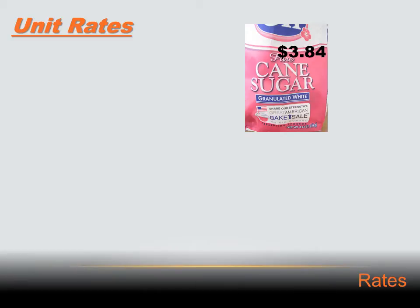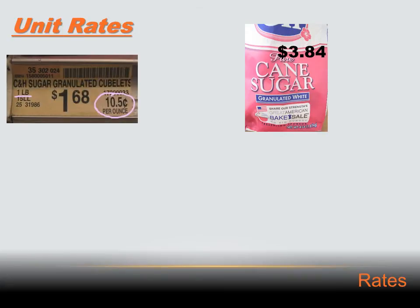At the grocery store, unit rates help you compare prices when items come in different-sized containers. You might need to decide whether it's cheaper to buy a four-pound bag of sugar or a one-pound bag. The one-pound bag costs $1.68, and the label says that's 10.5 cents per ounce. The four-pound bag costs $3.84. To compare them fairly, you need to create unit rates for both and compare.